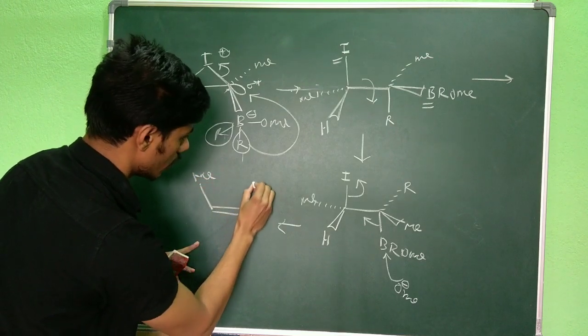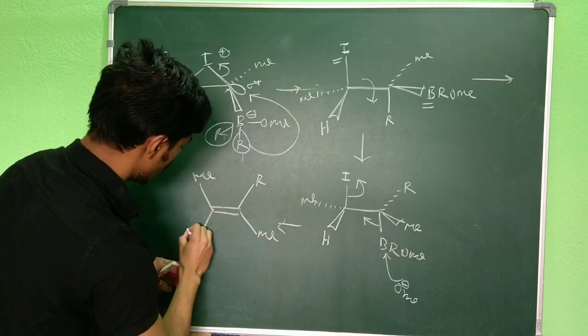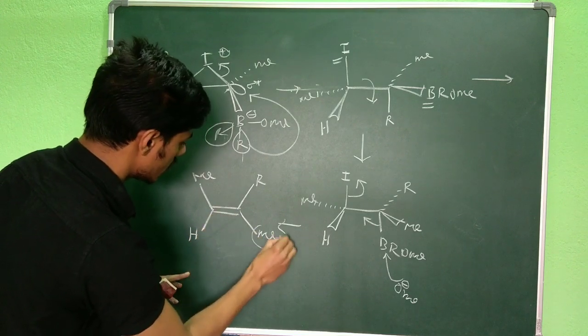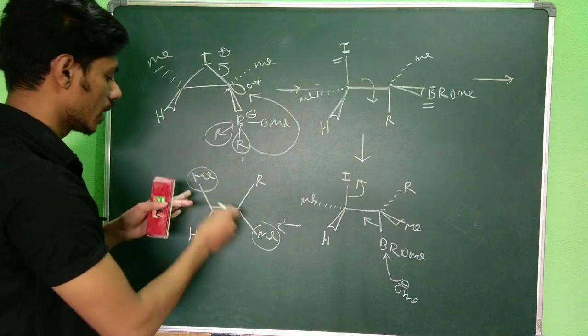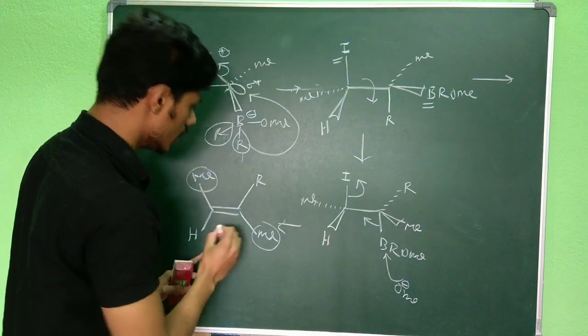So the product you will get is: methyl group over here, R group over here, another methyl over here, and this is hydrogen. You can see this methyl and this methyl they become trans to one another. So this is the product B you will get.